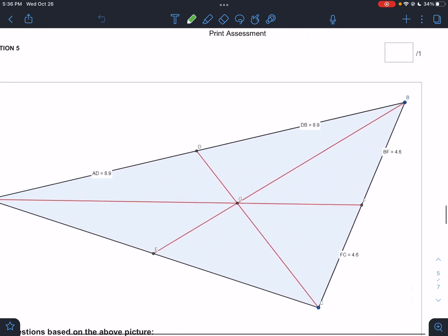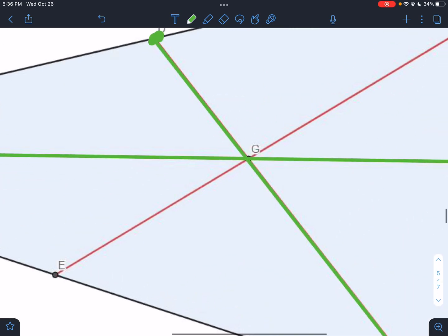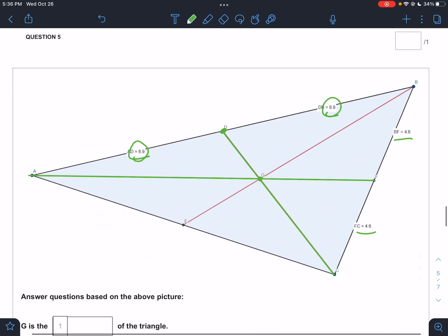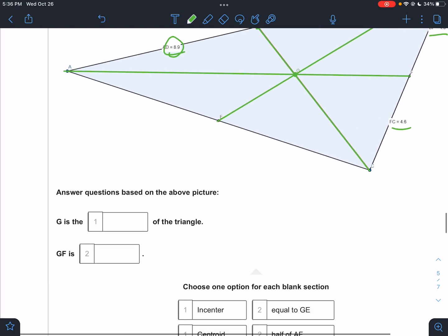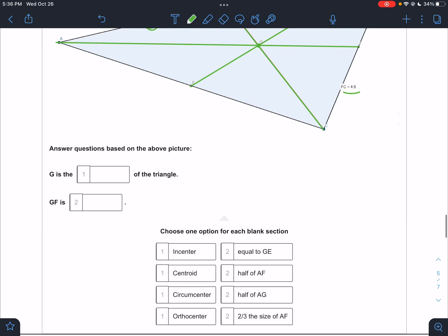Looking at number five here. So what are the things that we see? I see that 8.9, 8.9, that means this is a midpoint. That means this is a median. Over here, 4.6, 4.6, that means this is also a median. And if the two medians hit here, that means the third one also would have to hit there. That is a guarantee this is a median. So if I'm guaranteed I have three medians, then what is point G? Point G is the centroid.